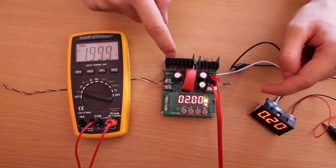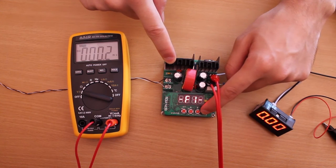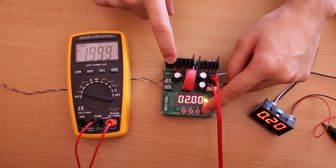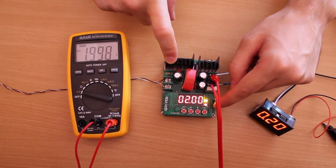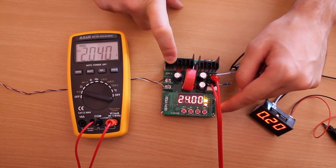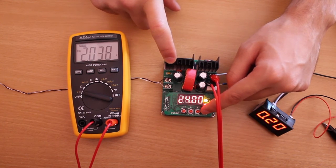Because, on the first function, you can cycle between displaying 2V and the current being limited to 200mA. Or displaying 24V with the current being limited at the same value.